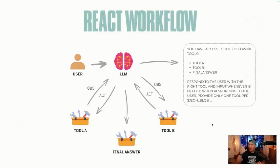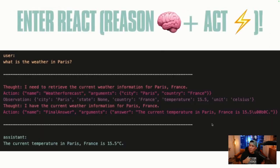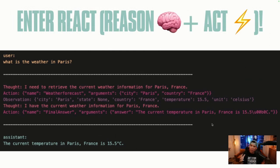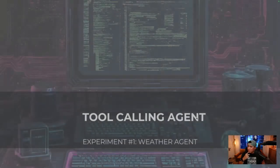The ReAct loop happens in one AI system, one prompt with an LLM, cycling until it achieves its objective. For example: 'What is the weather in Paris?' — the LLM reasons that it should use a weather tool, waits for execution, receives the observation, then says 'I have all the information I need to answer.' This reasoning process is super powerful. Even though it's a basic pattern today — there are many more advanced patterns — it's a very interesting starting point for thinking about orchestrating these steps.